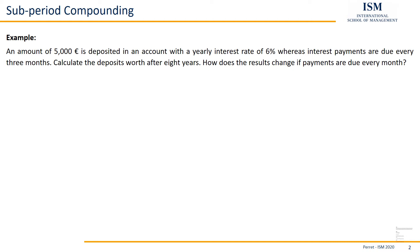How does the result change if payments are due every month? The difference here is that in each period — each year — we actually have four interest payments. So due to the compounding effect, in the end we will have a higher result than if we were to only have one interest payment, even though we reduce the 6% accordingly.